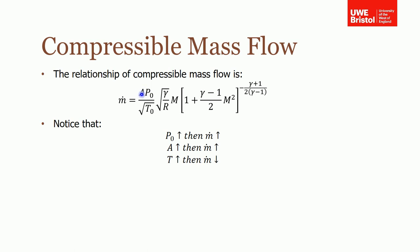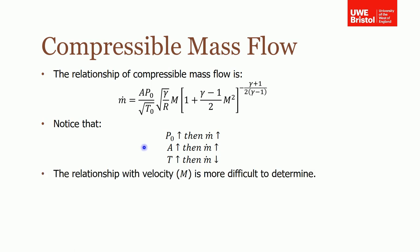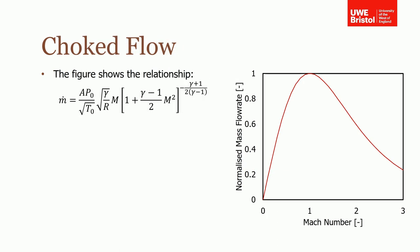If we increase the cross-section area of our pipework then the mass flow rate goes up — again that makes sense. If we increase the stagnation temperature then the mass flow rate decreases, which makes sense because increasing temperature decreases density, so mass flow rate goes down. However, the relationship with fluid velocity is more difficult to determine because it's wrapped up in exponents, so the best way is to plot it graphically. If we plot mass flow rate as a function of Mach number with all other terms held constant — normalising the mass flow rate — we end up with a characteristic relationship.